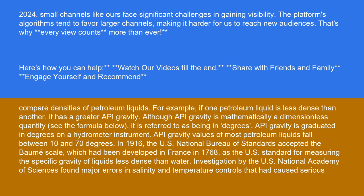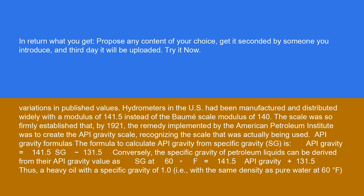Investigation by the U.S. National Academy of Sciences found major errors in salinity and temperature controls that had caused serious variations in published values. Hydrometers in the U.S. had been manufactured and distributed widely with a modulus of 141.5 instead of the Beaumont Scale Modulus of 140. The scale was so firmly established that, by 1921, the remedy implemented by the American Petroleum Institute was to create the API gravity scale, recognizing the scale that was actually being used.